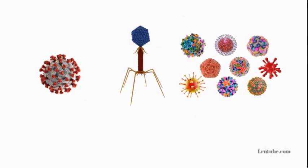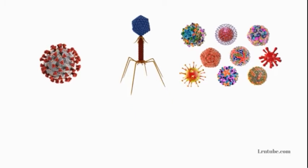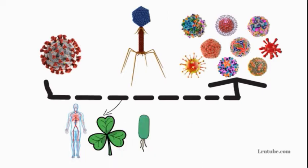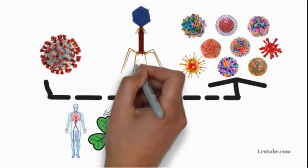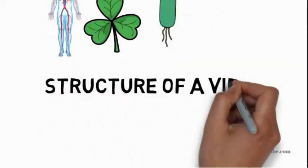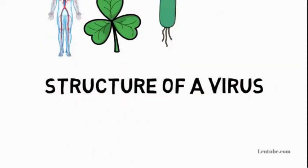Viruses are the most common biological units on Earth, outnumbering all other types combined. Viruses can infect humans or animals, plants, and even bacteria. Viruses that affect bacteria are called bacteriophage.